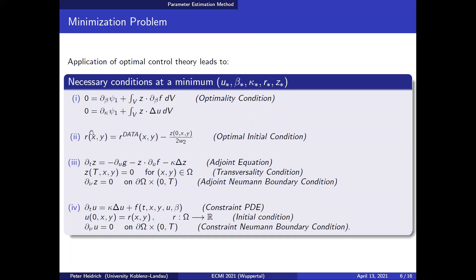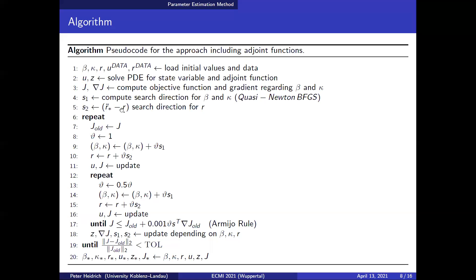We step into this direction from the old r of the iteration. Then, like typical optimization, we have a step size, update our values, update our system and objective function. If we fulfill the Armijo step size rule we take these values and update; if not we reduce the step size — for example multiplied by a factor in each step — and repeat until we fit the Armijo rule. The whole thing is repeated until we have convergence.